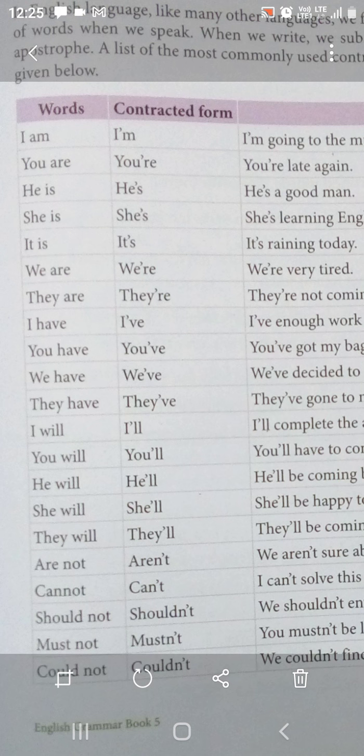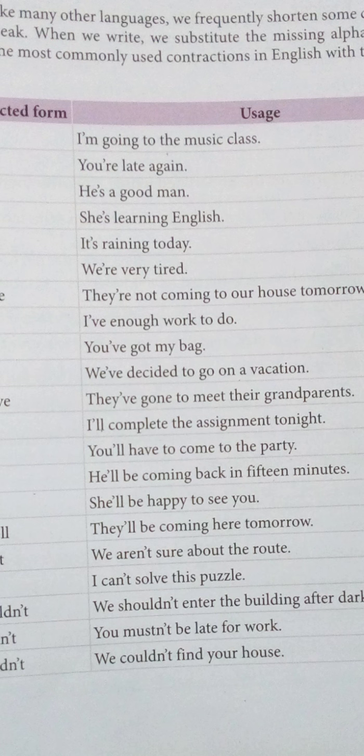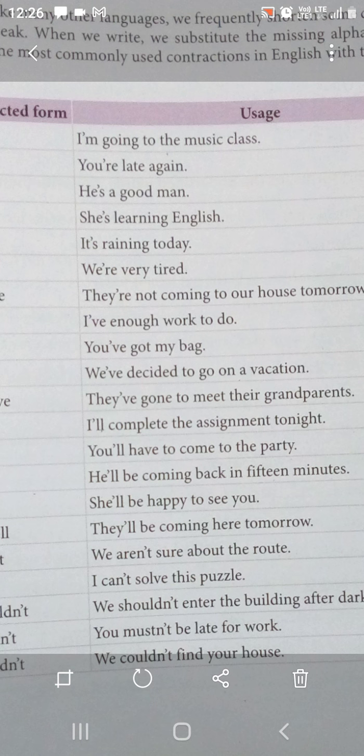Dekhiye kaise likha gaya hai: I will → I apostrophe double-L (I'll). You will → you'll. He will → he'll. She will → she'll. They will → they'll. Examples: I'll complete the assignment tonight. You'll have to come to the party. He'll be coming back in 15 minutes. She'll be happy to see you. They'll be coming here tomorrow.